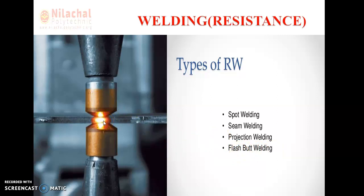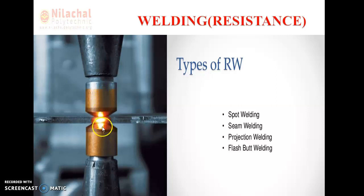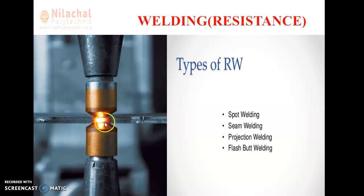You can see in this figure: we are having two plates here, and we are applying current onto them. Current passes through the assembly, and the heat is maximum at the joint area. Due to that, this area gets fused, and when the area is fused, we apply pressure so that the pieces bond with each other, and after allowing to solidify, you can find the weld.